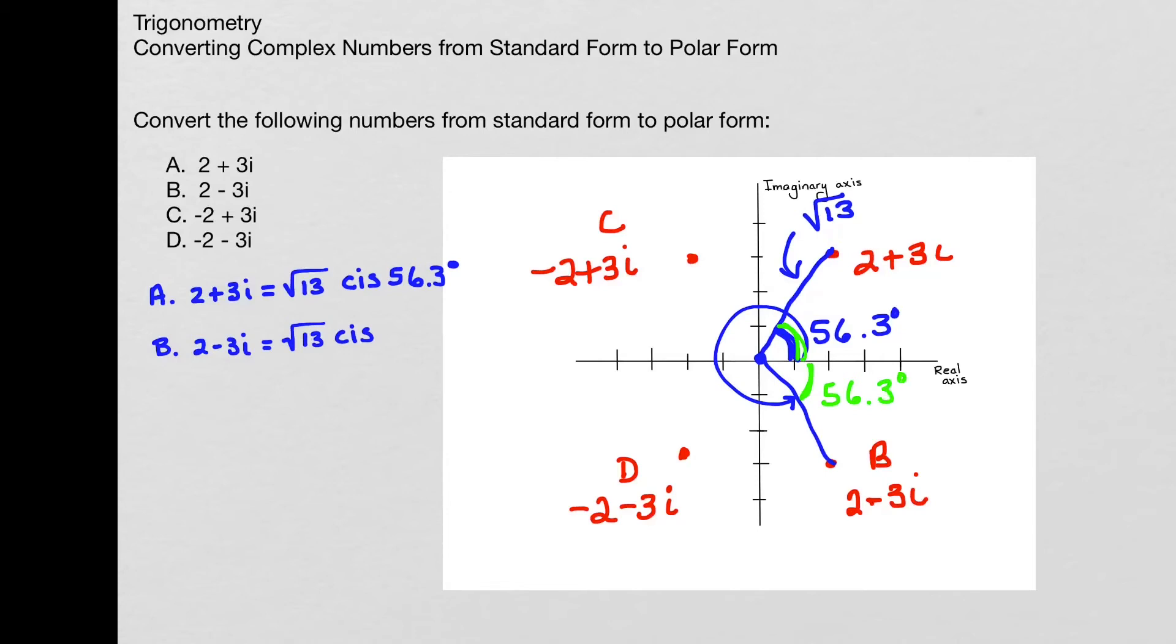So what do I do to find the large angle? I'll just subtract 56.3 from 360. And I get 303.7 degrees. And now I've got B.